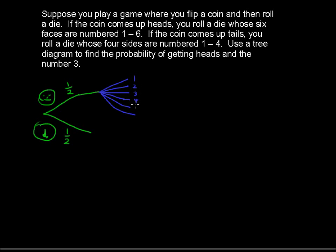4, 5, and 6. And just to blanket label this, I'll say 1 in 6 for each. You have a probability of 1 in 6 for each of these tree branches.